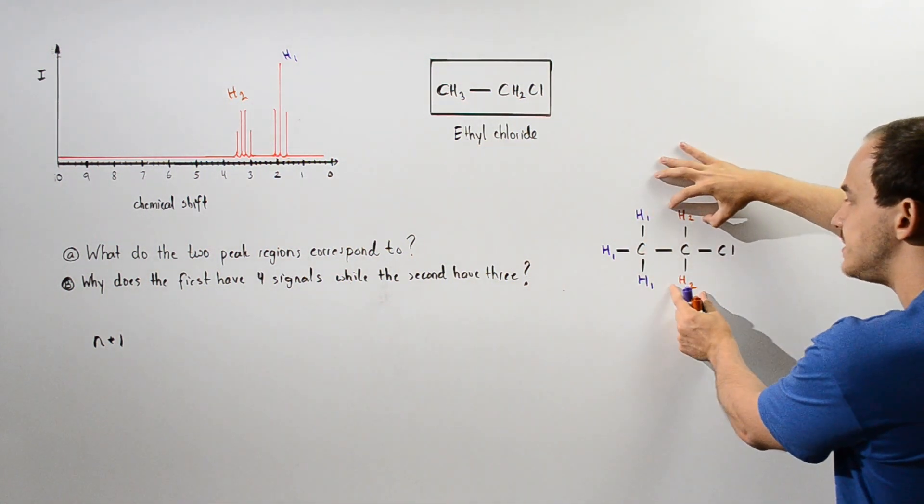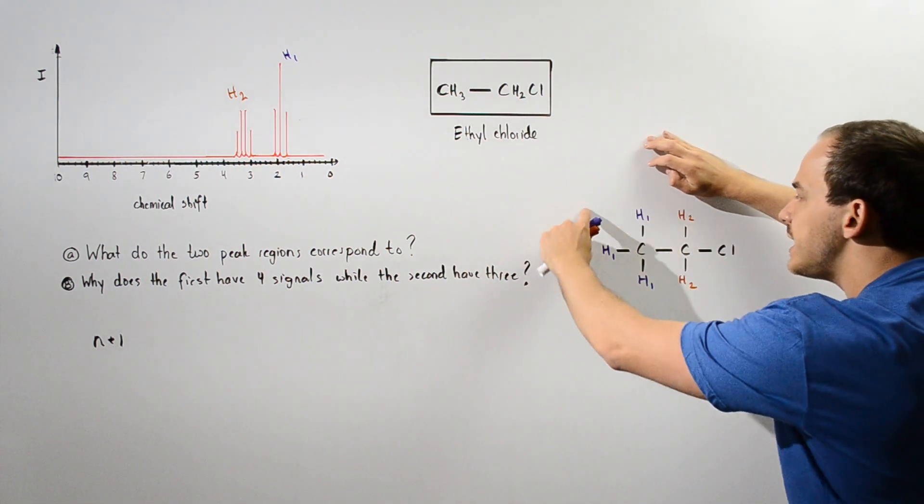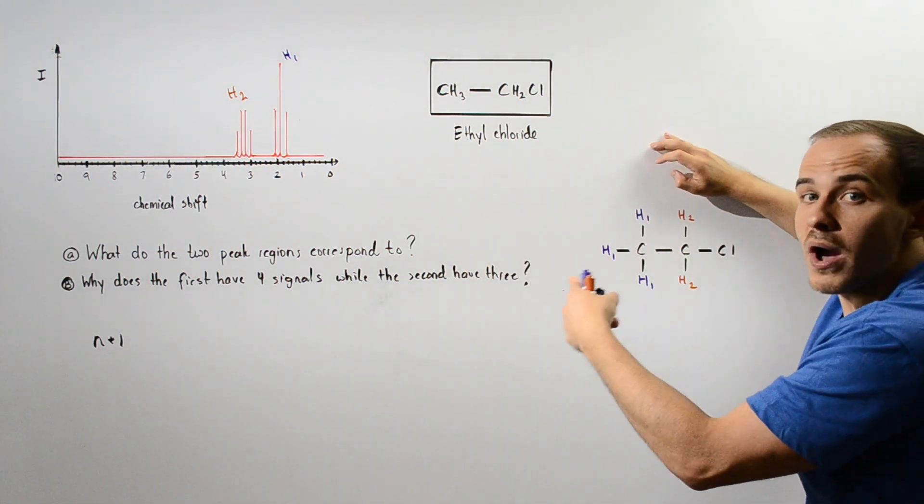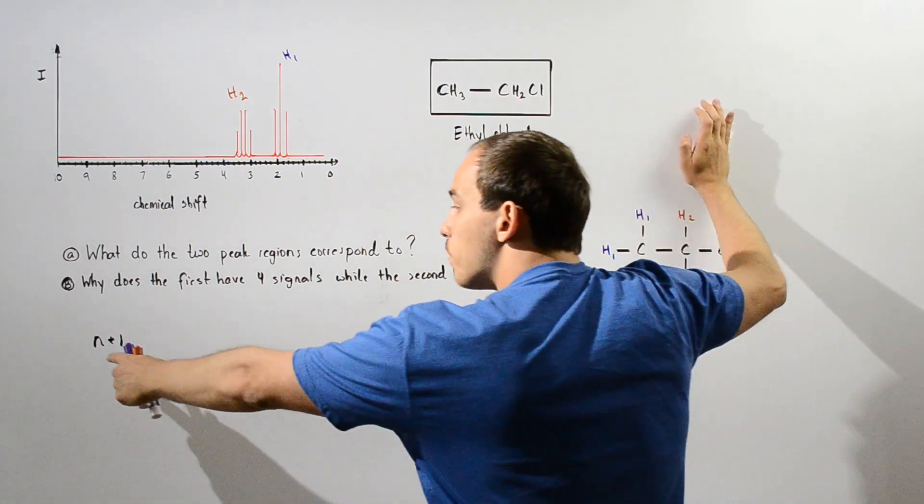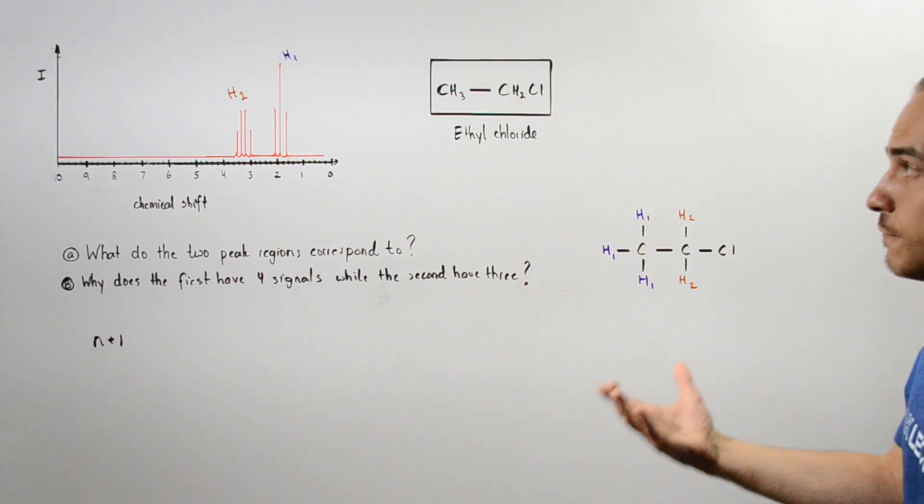So that means this will have three peaks as it has in the following diagram. And likewise, if we look at either one of these H atoms adjacent to this carbon, we have three identical H atoms. So n is equal to 3. So by the rule, n plus 1 equals 3 plus 1, which is equal to 4.